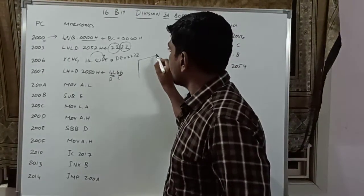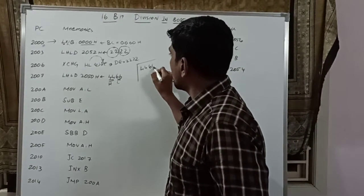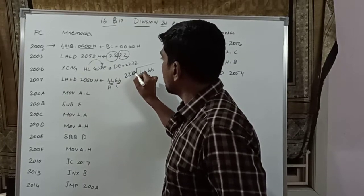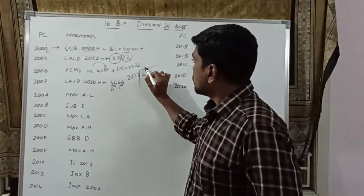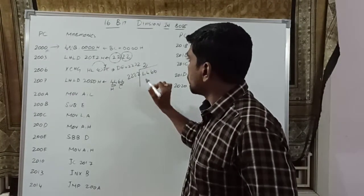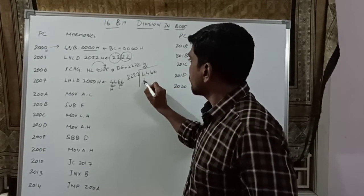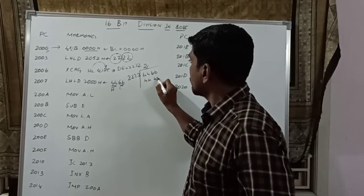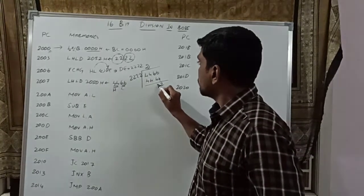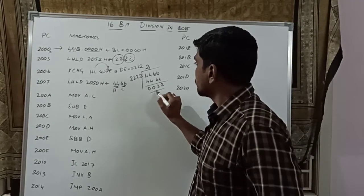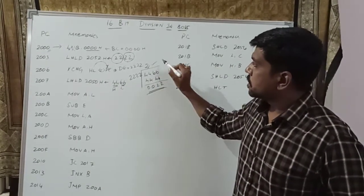Here you can see the two values to be divided. The normal calculation: 4466H divided by 2222H. The quotient value is 2. Just multiplying: 2222H times 2 gives 4444H. So the remainder is 4466H minus 4444H equals 0022H. So 22H is the remainder, and 2 is the quotient. This manual calculation will be applied in the assembly language program, and the result will be obtained in binary form.